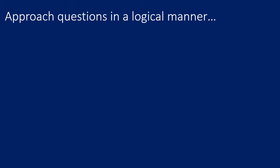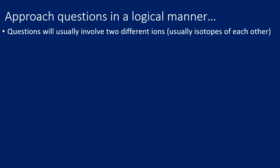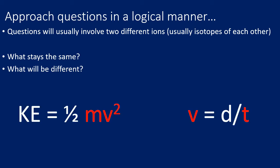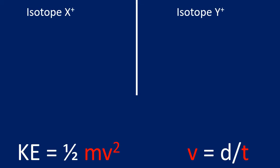When approaching these calculation questions, use a clear logical manner. The question usually involves two different isotopes or ions. In mass spectrometry, some quantities always remain the same — the distance of the flight tube and the kinetic energy. Other things change: the mass and the velocity of the ions. I suggest splitting the question in two — isotope X and isotope Y have different masses, velocities, and times, but the same distance and kinetic energy.